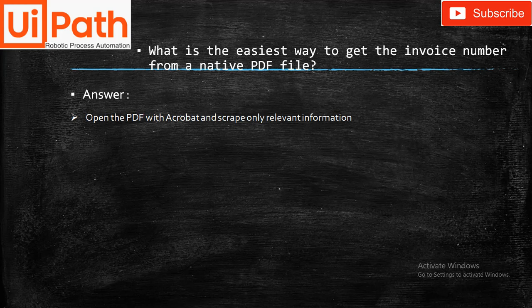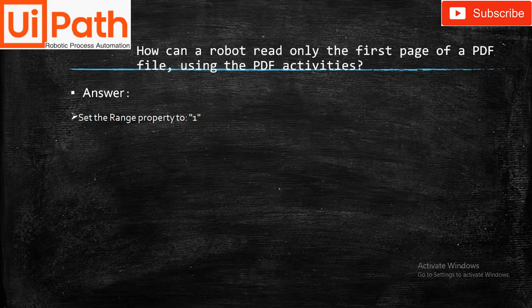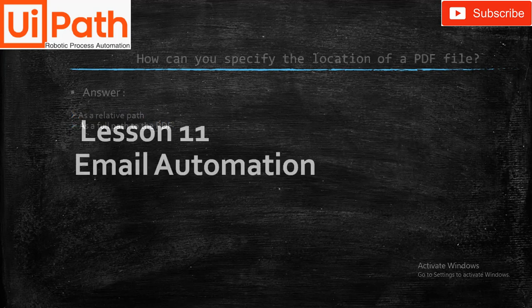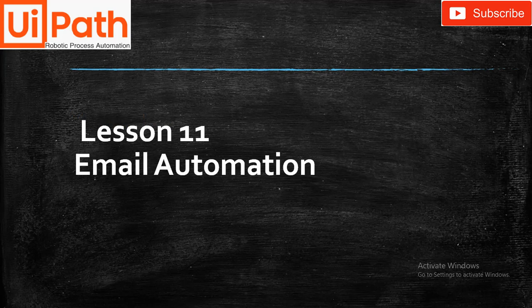What is the easiest way to get the invoice number from a native PDF file? Answer: open the PDF with Acrobat and scrape only the relevant information. How can a robot read only the first page of a PDF using the PDF activities? Set the Range property to 1. How do you specify the location of a PDF file? As a relative path or as a full path to the PDF.